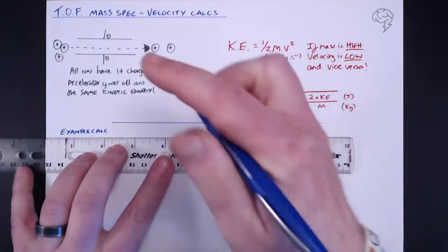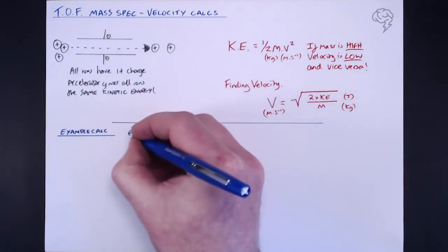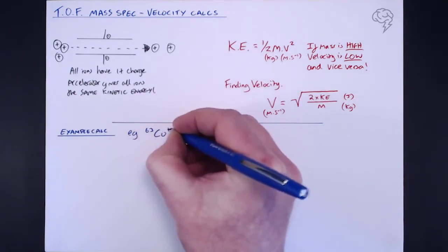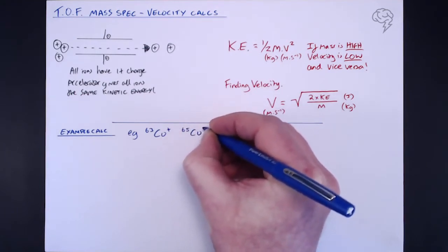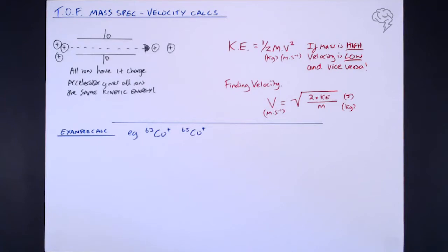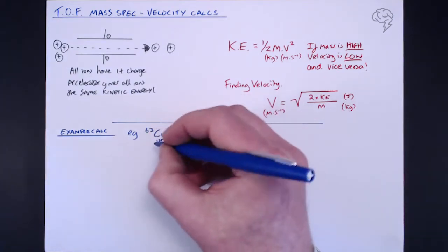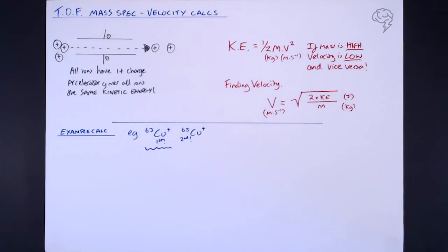Let's look at an example using isotopes of copper. There are two major isotopes of copper: copper-63 and copper-65. These two are mixed up in our sample — which one is actually going to get to the detector first? It's going to be copper-63 because it's the lightest. The copper-65 ions come in second because they're heavier. They've both been given the same kinetic energy, but the lighter ones travel faster and have a greater velocity while the heavier ones have a smaller velocity.